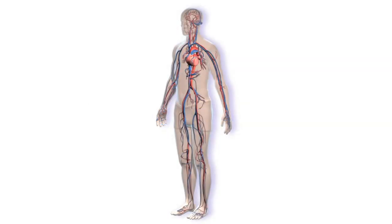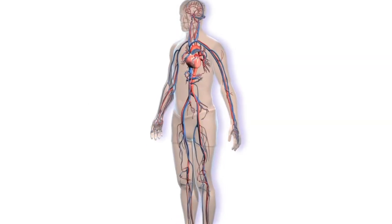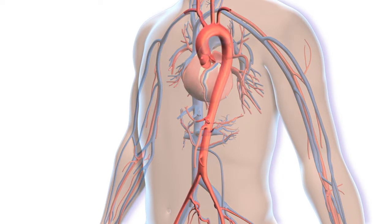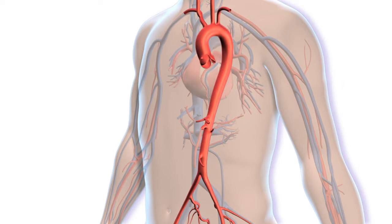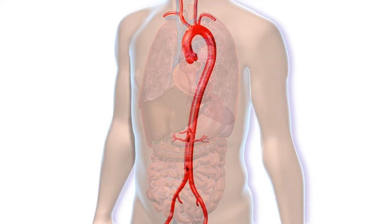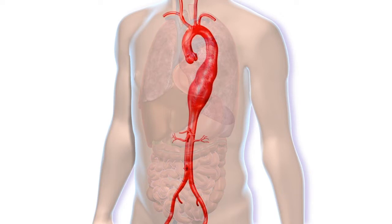The aorta is the main blood vessel that carries blood from the heart to the rest of the body. Like most arteries, the aorta is elastic, which allows it to be filled with blood under high pressure. An aortic aneurysm is an enlargement or bulging of the aorta in which the artery wall weakens and expands like a balloon.